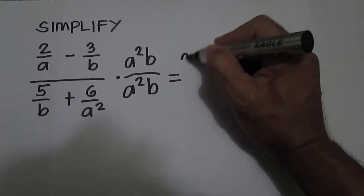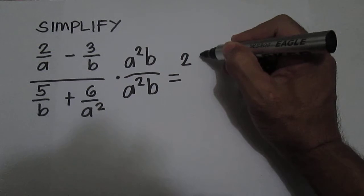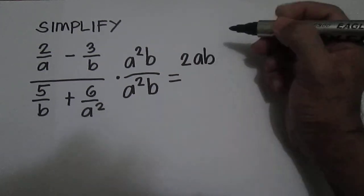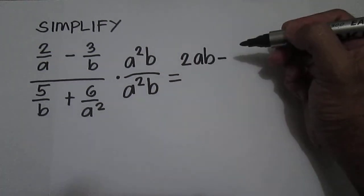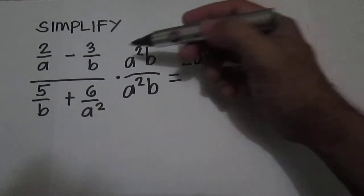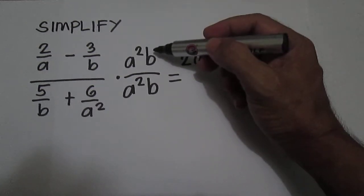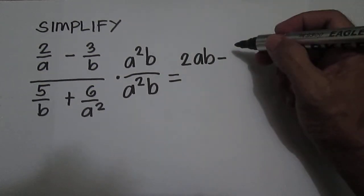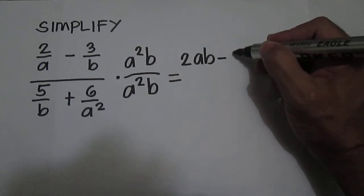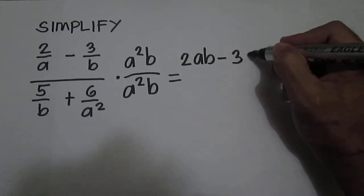2ab minus 3 over b times a squared b is 3a squared.